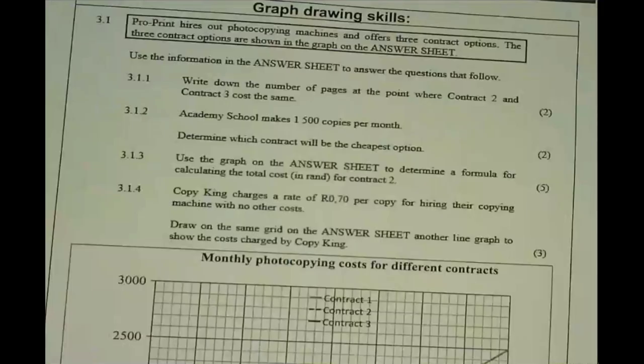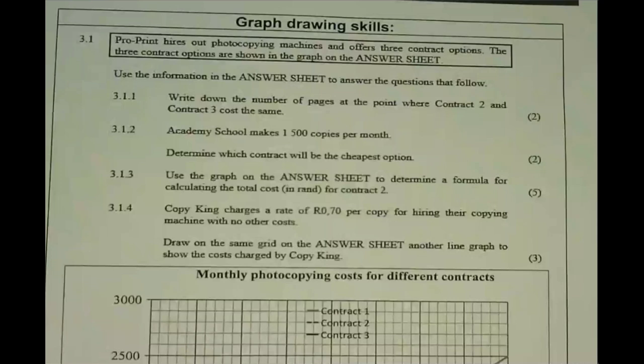Before we move on to today's work, there's one thing about graphs from Tuesday I want to cover. This is something you generally see in Paper 2. The papers are slightly different this year, so I don't know which paper you'll see it in, but the layout I'd assume will still be the same. This question involves Pro-Print hiring out photocopy machines with three contract options shown in a graph on the answer sheet.